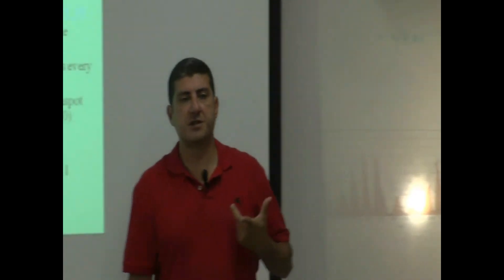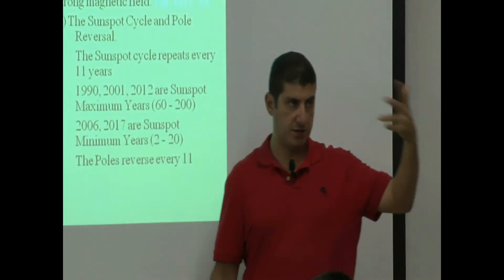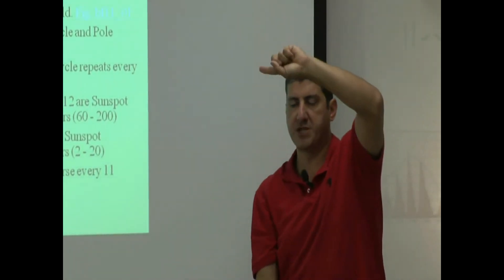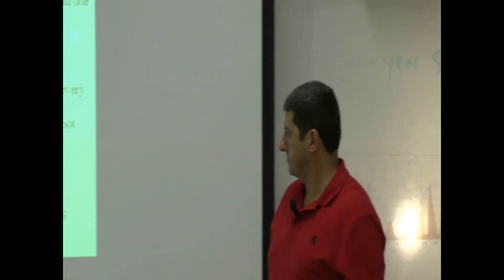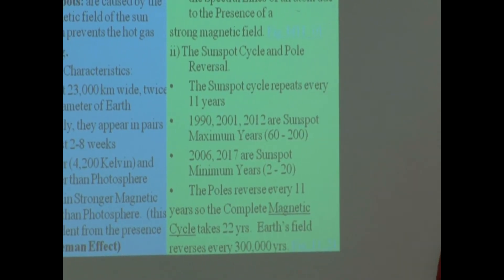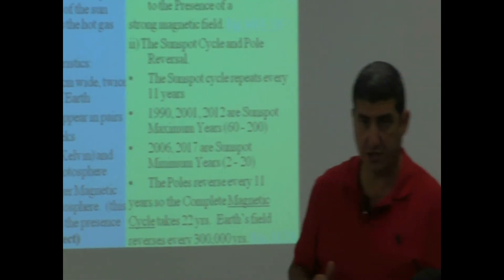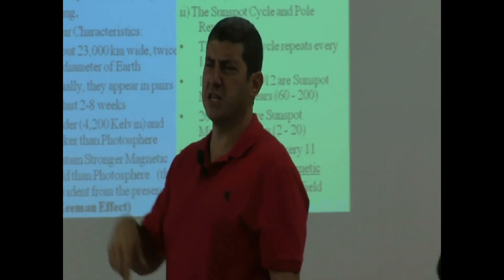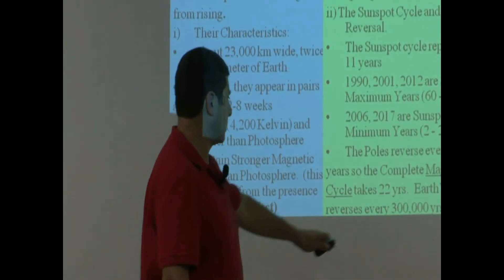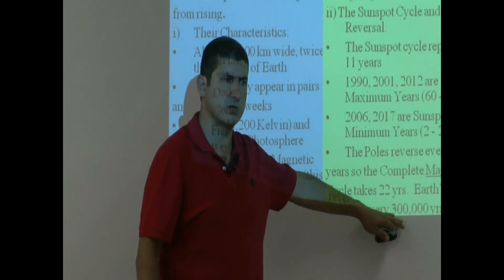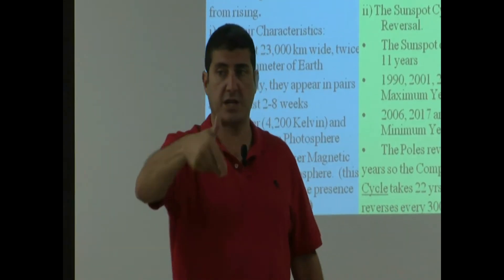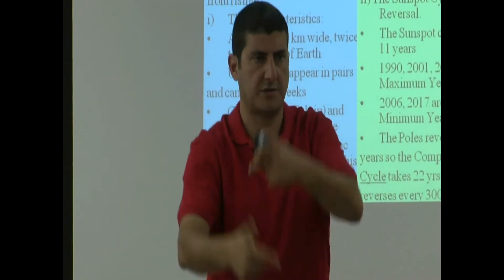Now, every 11 years, not only does a new sunspot cycle start, but the poles of the sun reverse: the North Pole becomes the South Pole, and the South Pole becomes the North Pole. The same thing happens to the Earth's magnetic field — it also reverses — but it takes many hundreds of thousands of years. We don't notice Earth's magnetic field reversal; it takes roughly around 300,000 years. The sun's field reverses every 11 years.